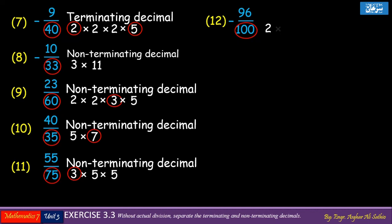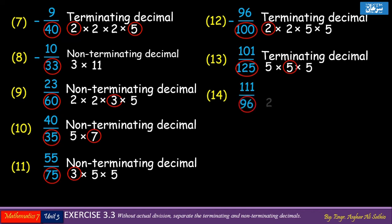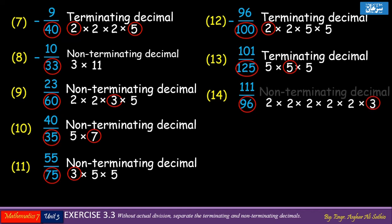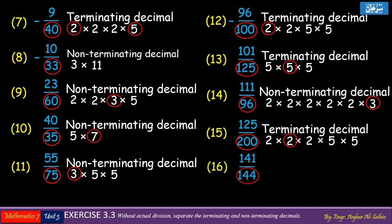Problem number 12: all prime factors are 2 and 5 only, so it is a terminating decimal. Problem number 13: all prime factors are 5, so it is a terminating decimal. Problem number 14: 3 is available in the prime factors of the denominator 96, so it is a non-terminating decimal. Problem number 15: all denominator factors are 2 and 5 only, so it is a terminating decimal.